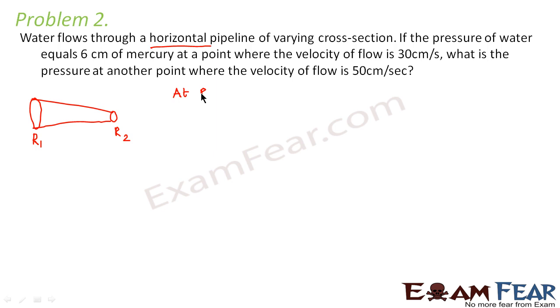Now according to question, let us suppose at R1, the velocity is V1 which is given as 30 cm per second. So we can say this is equal to 0.3 meter per second and what is the pressure at this point?